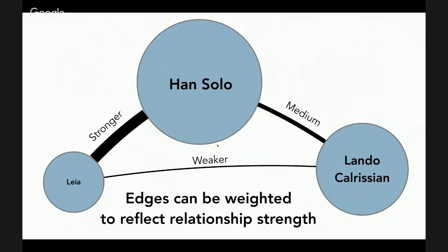Edges can also be weighted. In a network of letters being sent, we might decide these are directed relationships — I send a letter to Greg, that's an edge from me to Greg — and every time I send another letter to Greg, that edge becomes slightly stronger; the weight increases. So if I send 10 letters to Greg and he sends me one back, there is a strong relationship in one direction and a weaker relationship in the other.